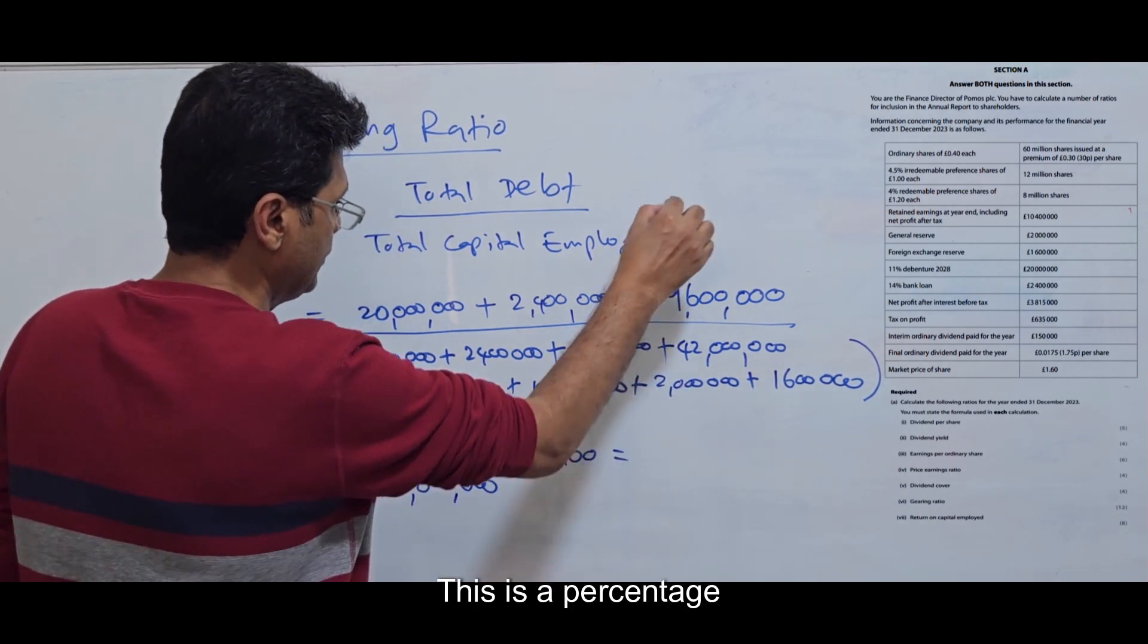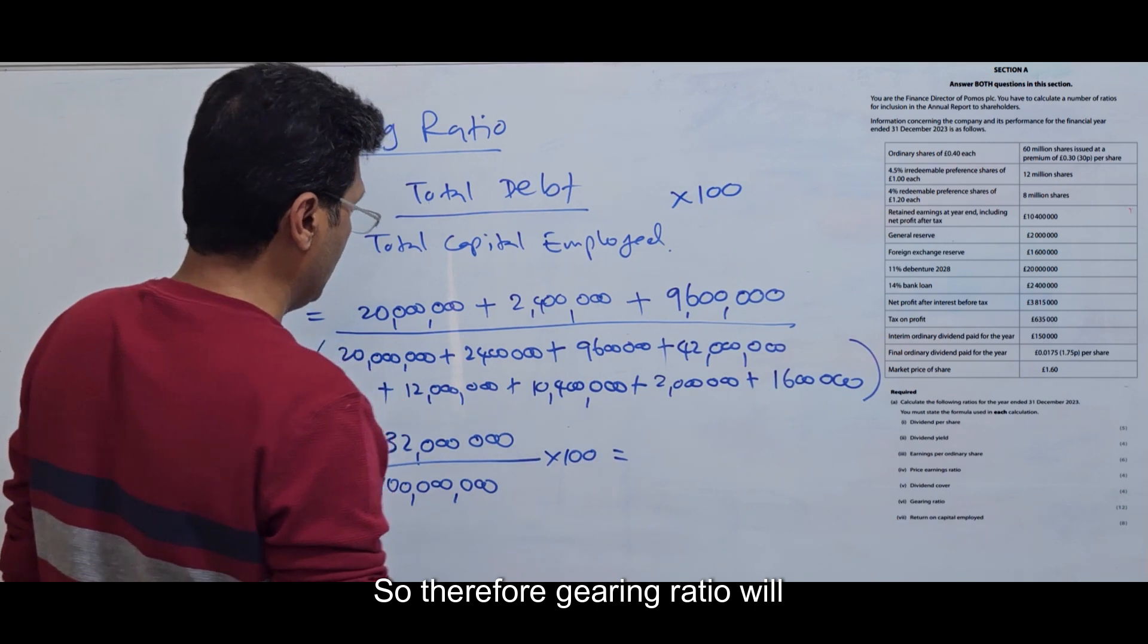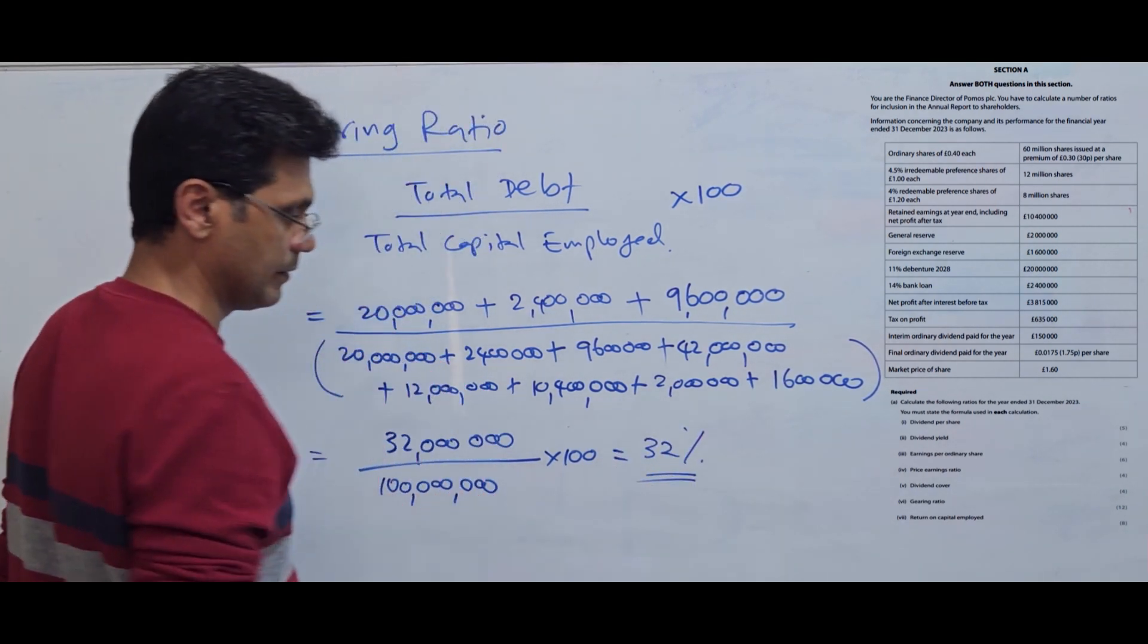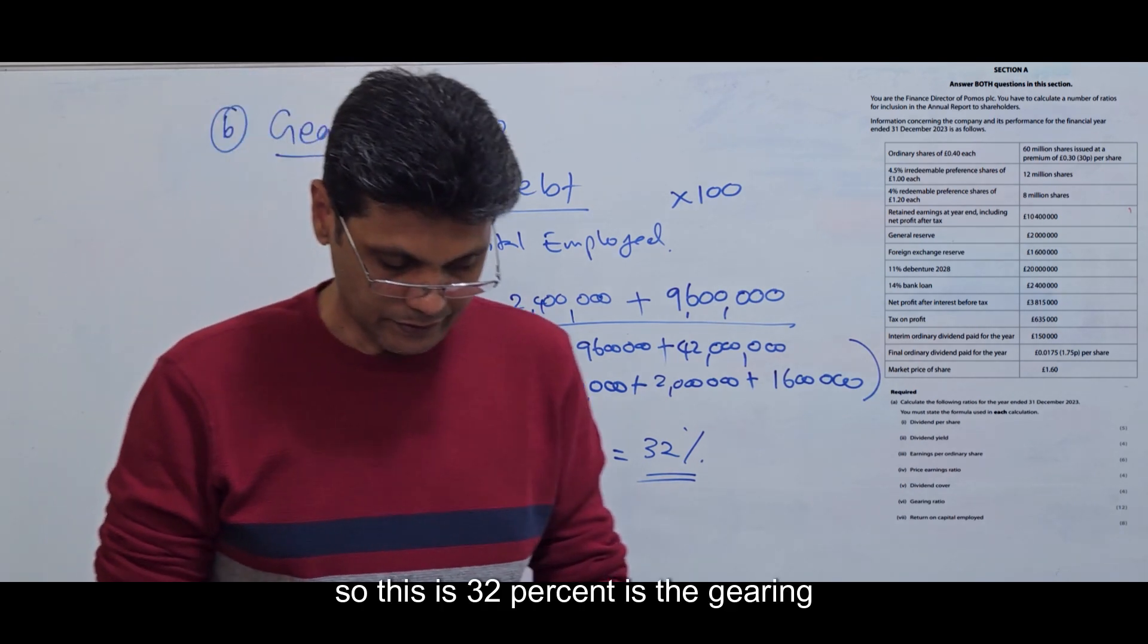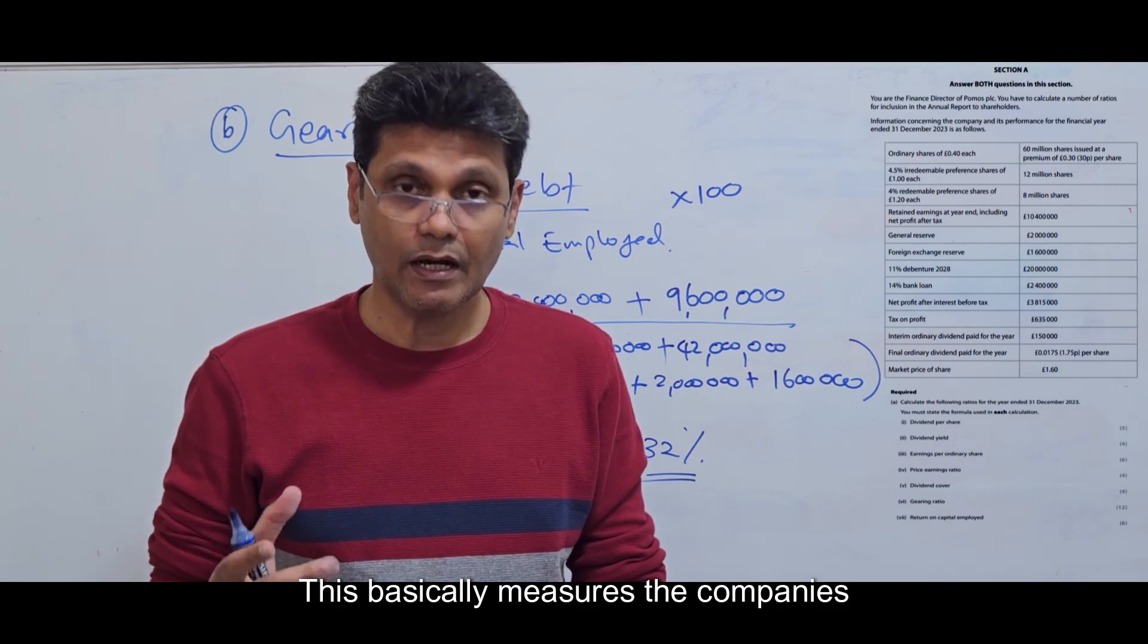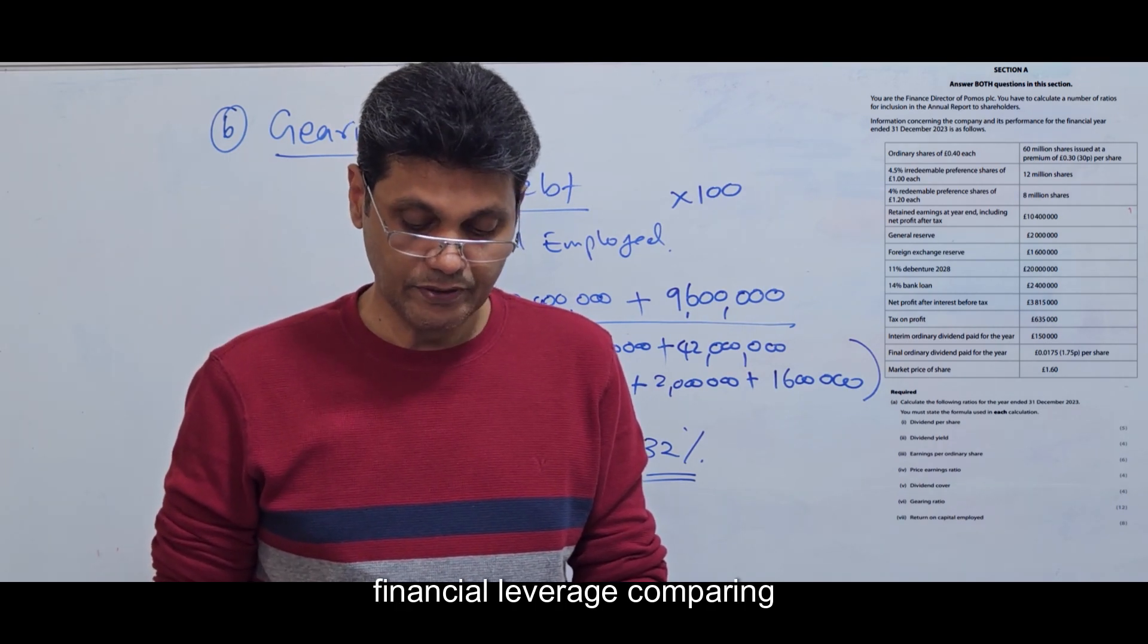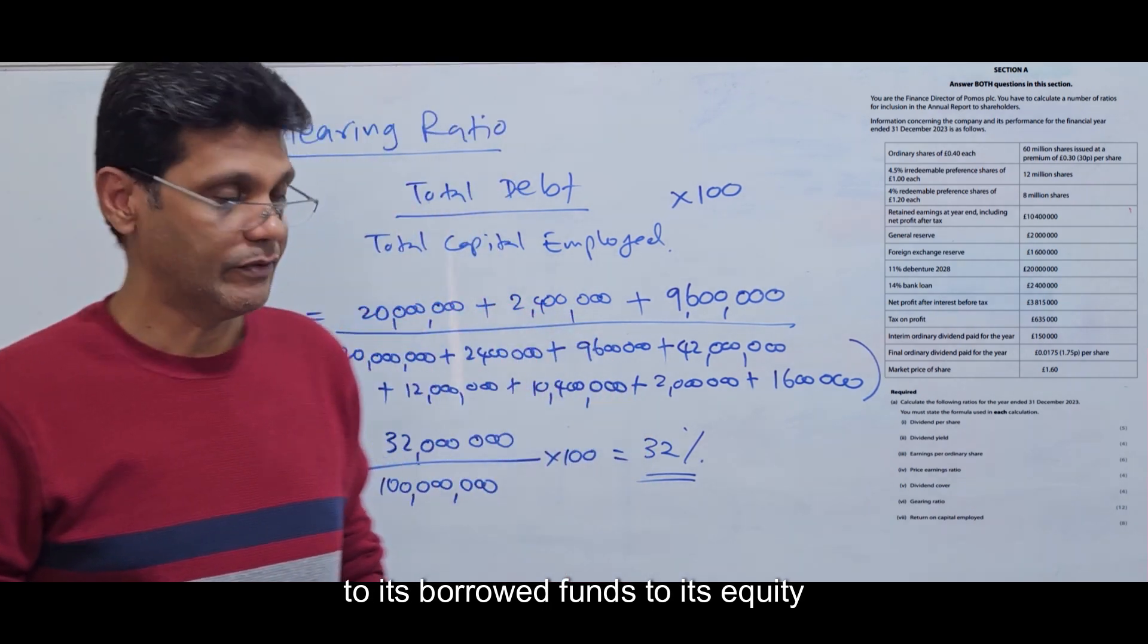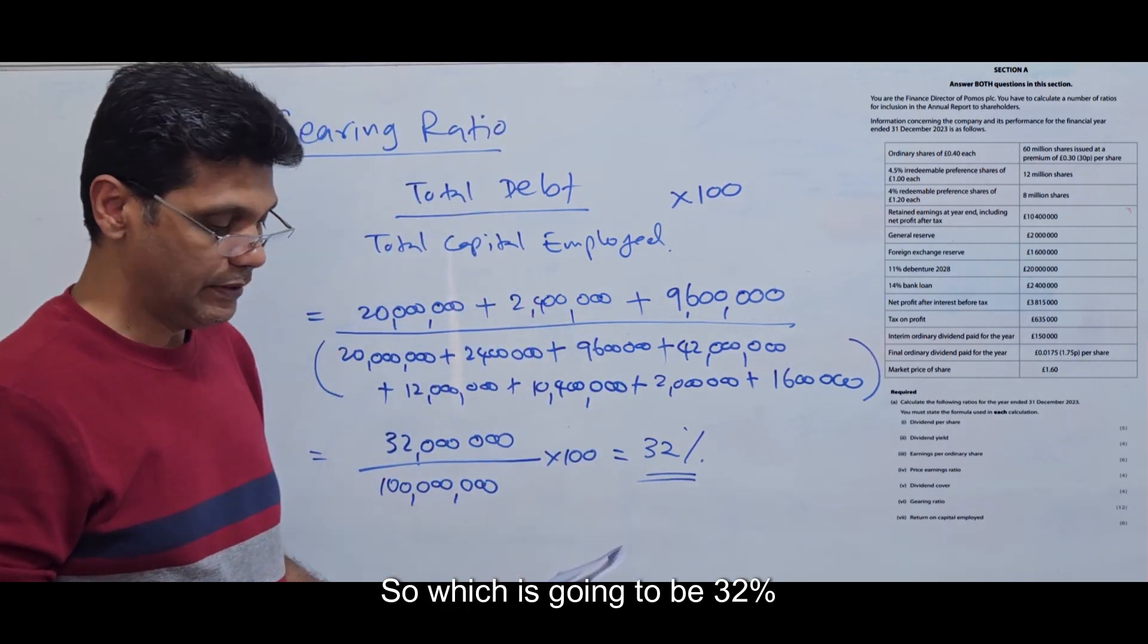This is a percentage, so the gearing ratio will be 32%. This basically measures the company's financial leverage comparing its borrowed funds to its equity.